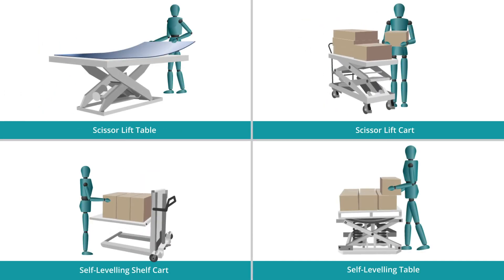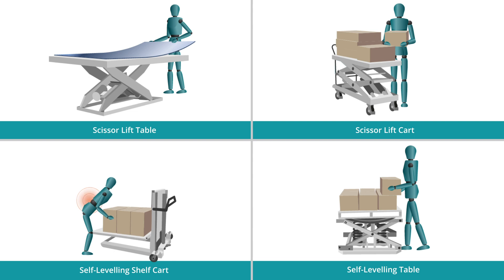Equipment with adjustability features allows workers to change the work area to reduce awkward body positions. Height and angle adjustable equipment and rotating features can reduce back bending and forward reaching.